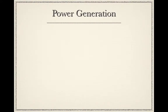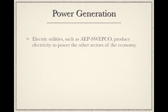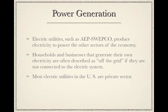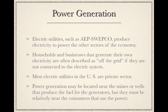Electric utilities such as AEP Swepco or Pea River Electrical Cooperative produce electricity to power the other sectors of the economy. Households and businesses that generate their own electricity are described as off the grid if they are not connected to the electric system. Most electric utilities in the U.S. are private sector. Power generation may be located near the mines or wells that produce the fuel for the generators, but they must be relatively near the consumers that use the power.